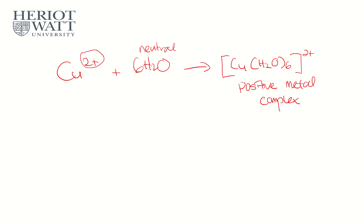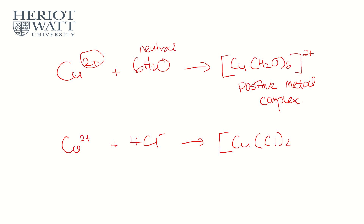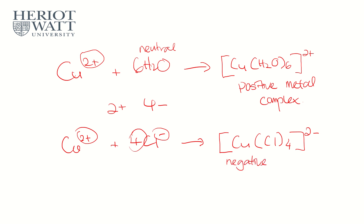Now let me give an example of a negative metal complex. Take copper 2+ again and mix it with four Cl⁻ chlorides. Chloride is a ligand, copper is a transition metal ion, so they form a complex ion: [CuCl4]. The copper is 2+ and we have four negatives, so 2+ plus 4− gives an overall charge of 2−. This is an example of a negative metal complex.